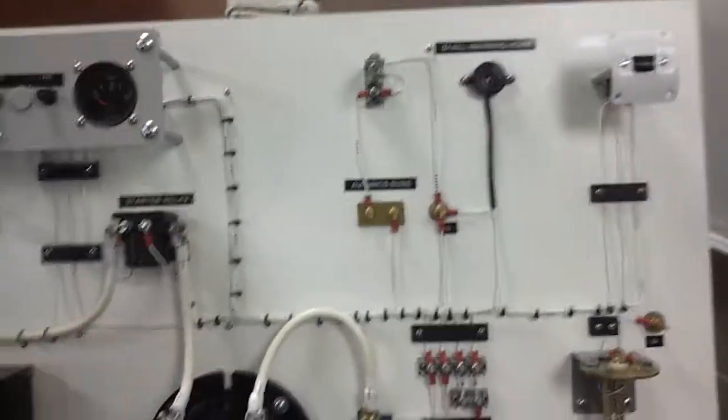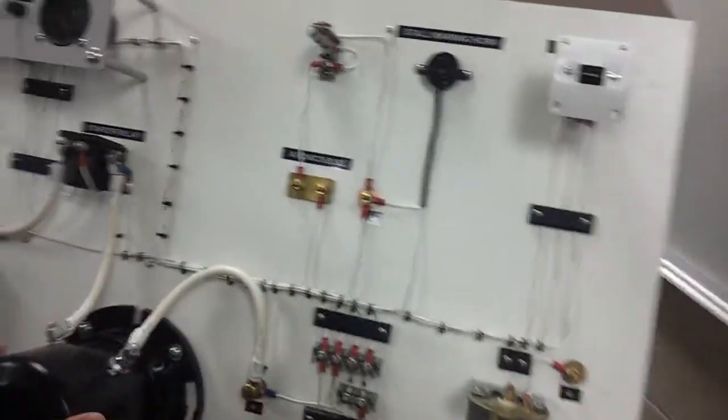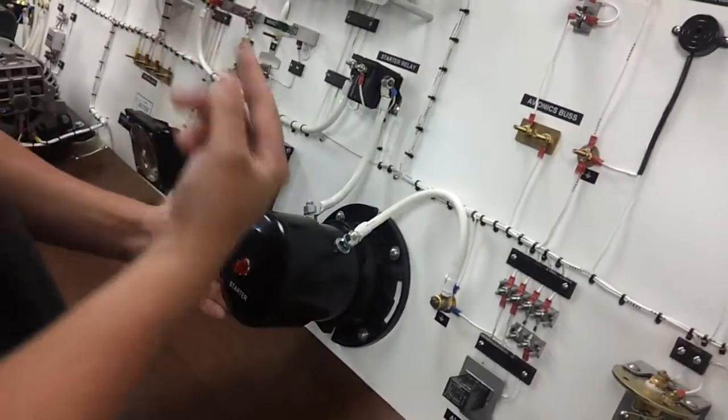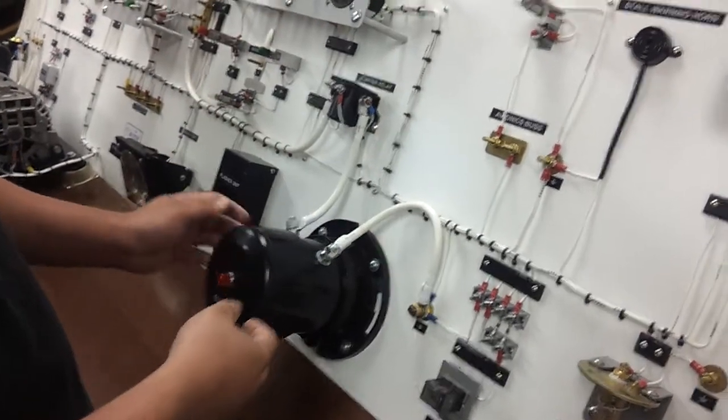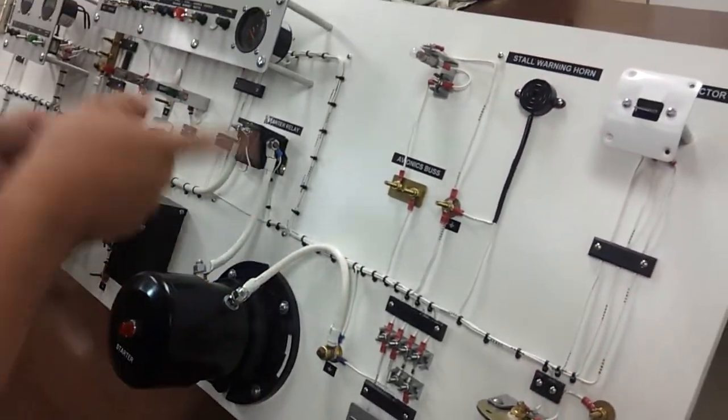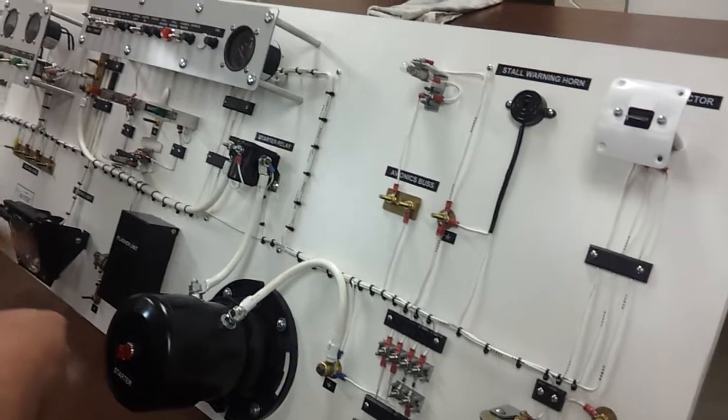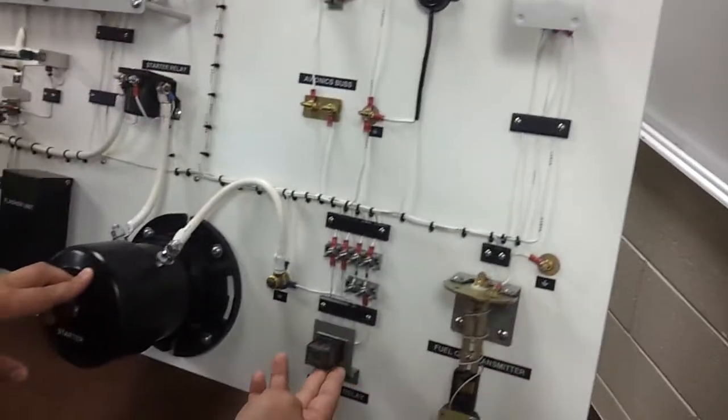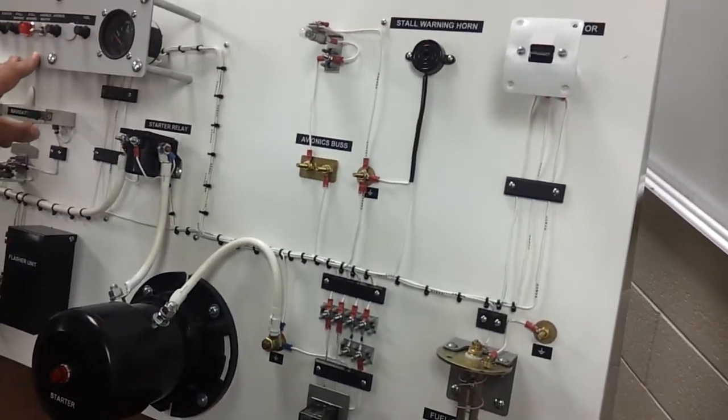Starter relay which just goes on and off. Starter which in this case is just a big resistor. In real life it's a little motor. Your avionics relay turns your avionics on and off.